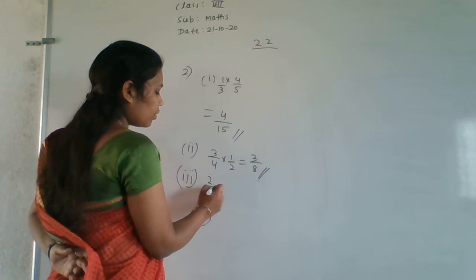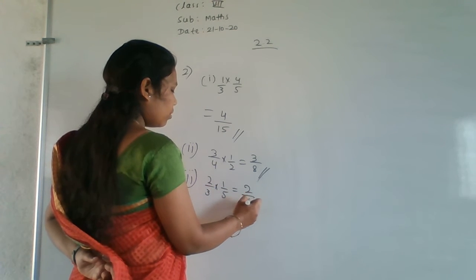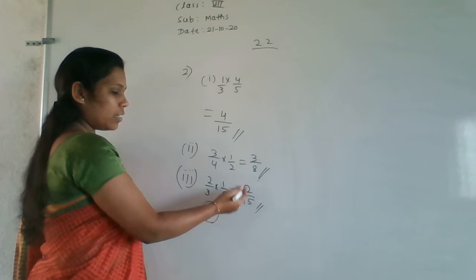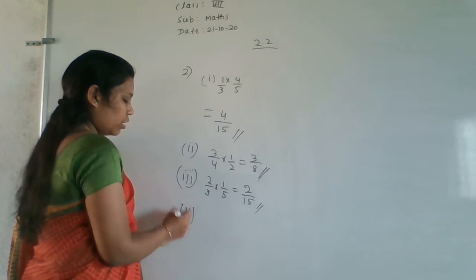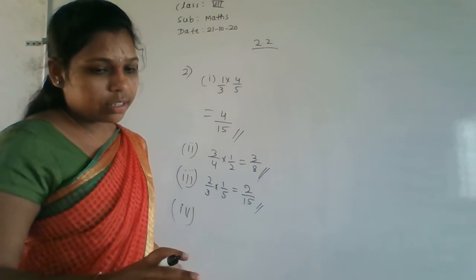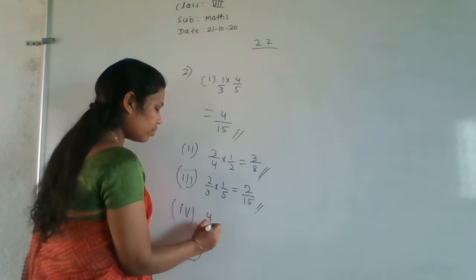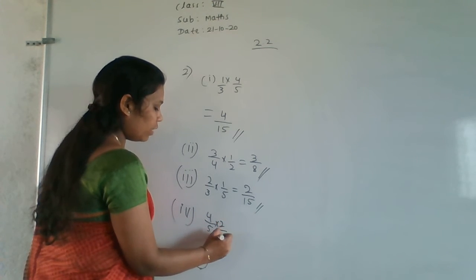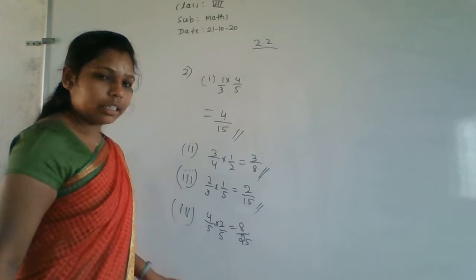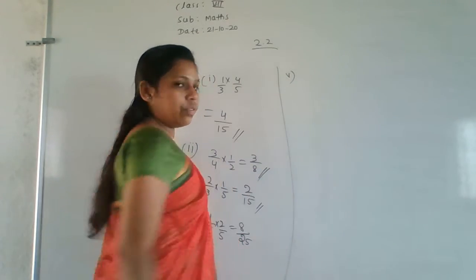Third question: 2/3 × 1/5. Multiply: 2×1 = 2, 3×5 = 15. No cancellation is possible, so the answer is 2/15. Fourth question: 4/5 × 2/5 = 8/25.